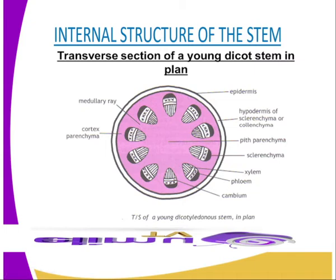The sclerenchyma is found in close association with vascular bundles. The walls of the sclerenchyma cells are thickened by the deposition of lignin in a process known as lignification.